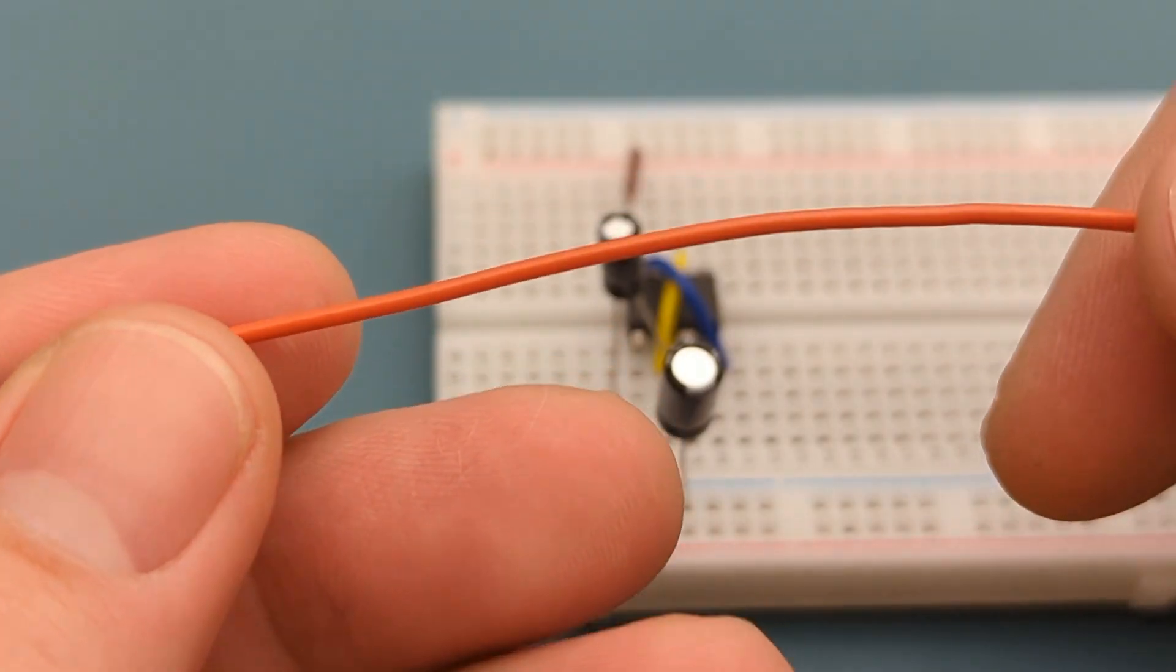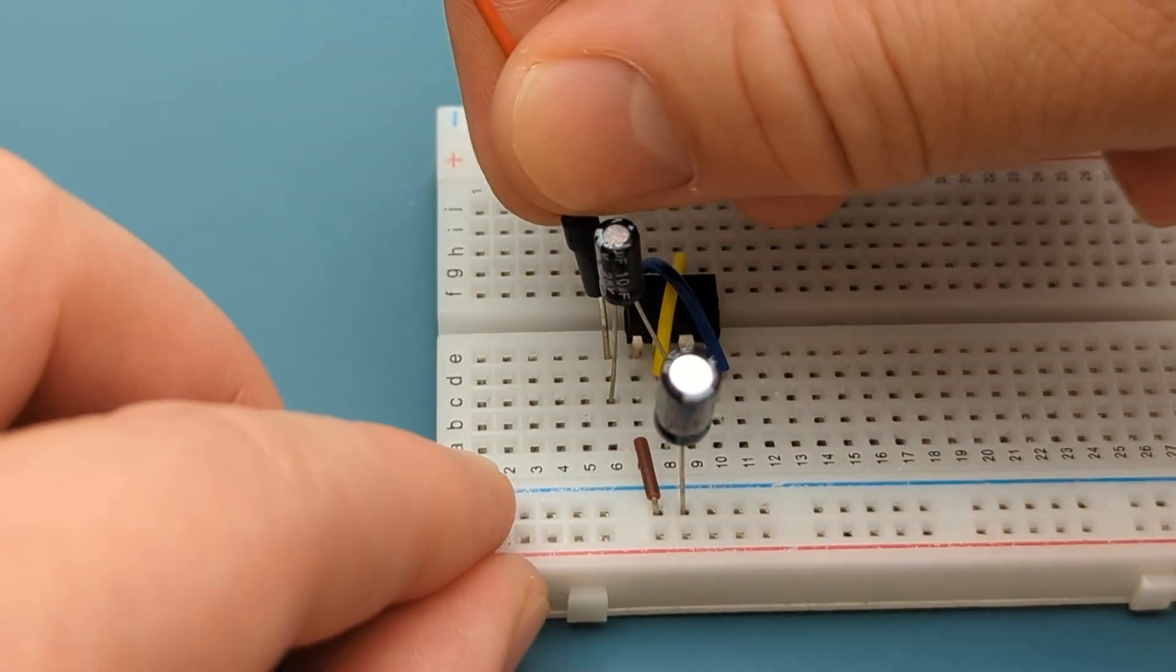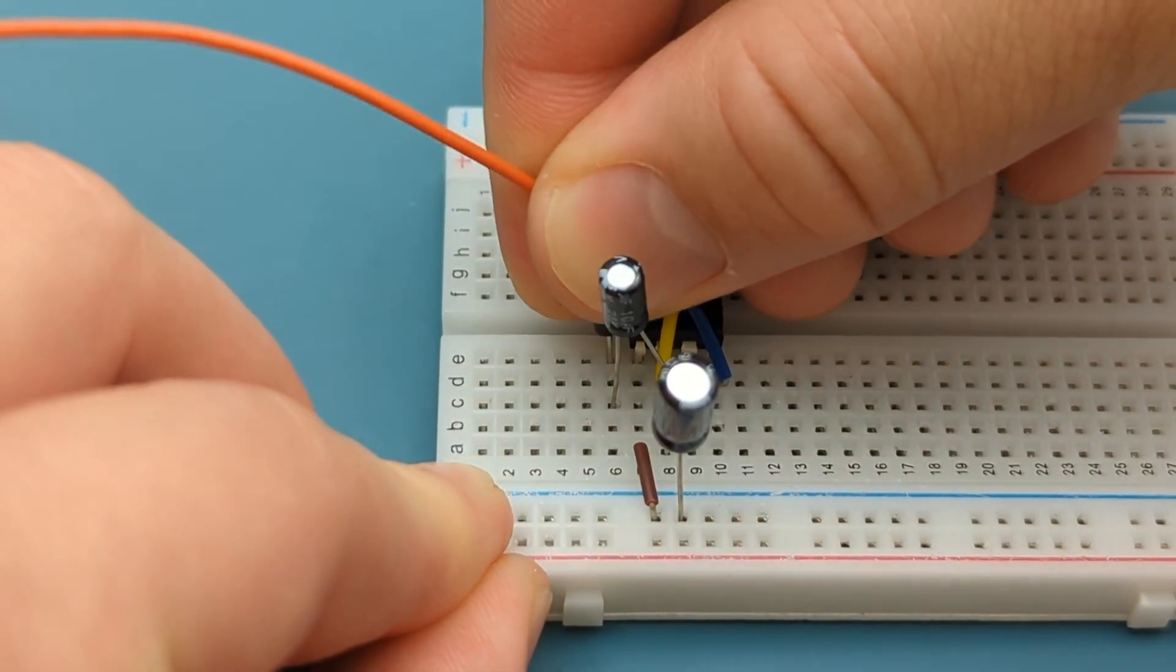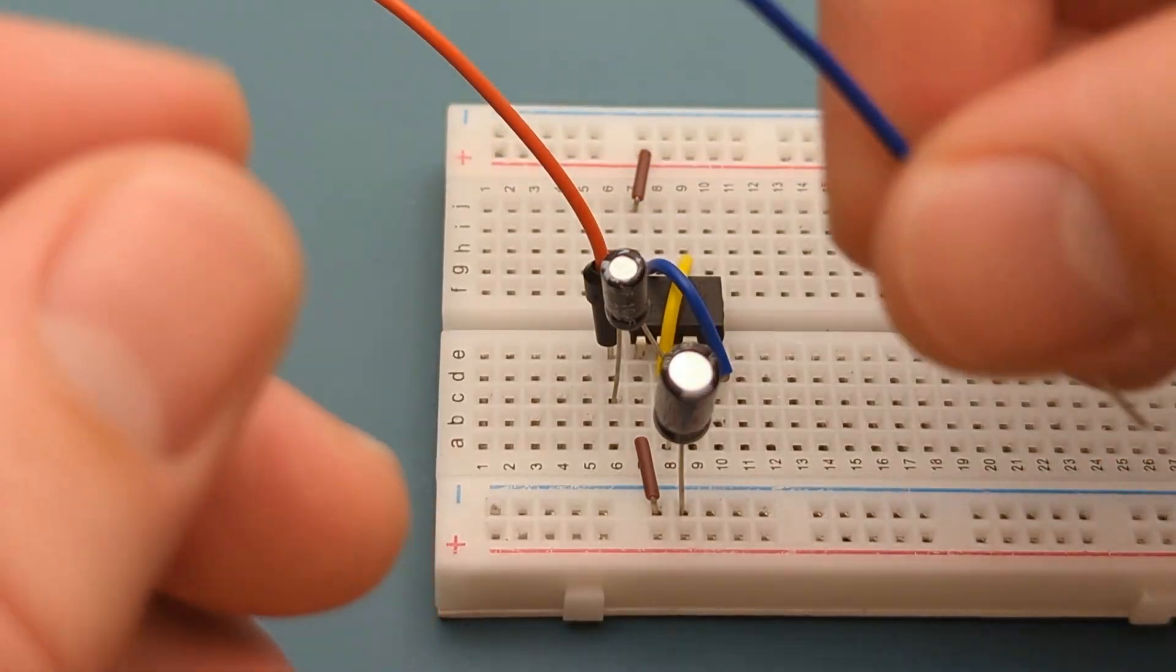Insert a jumper wire in the same row as the 10uF capacitor. Insert a jumper wire into the negative rail.